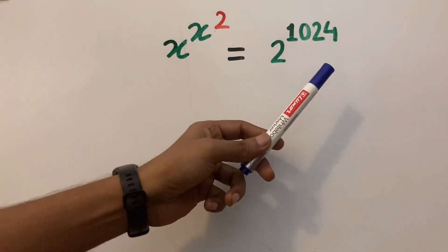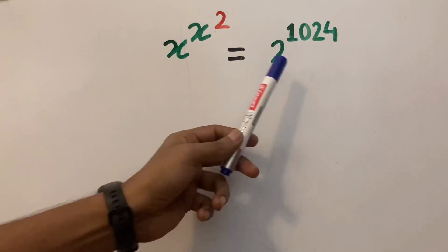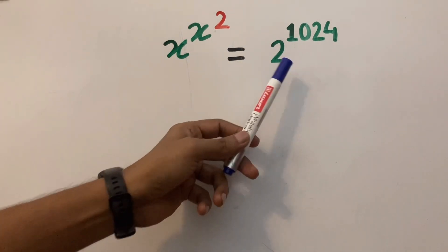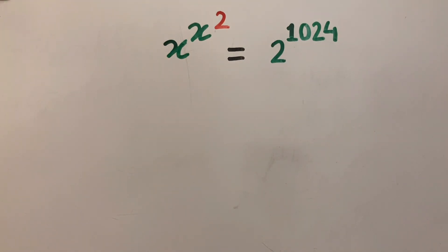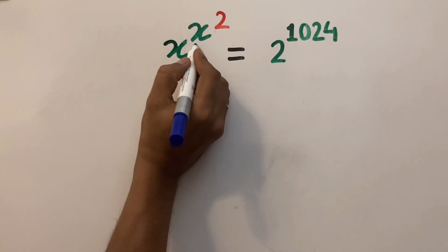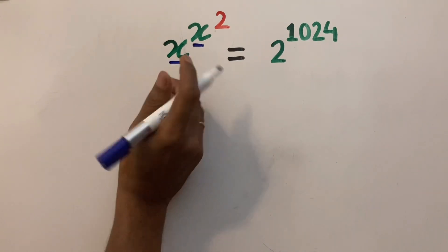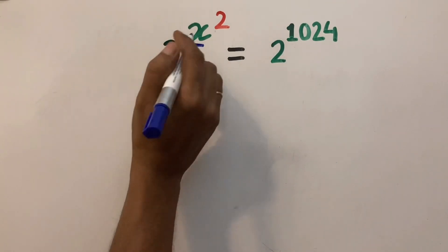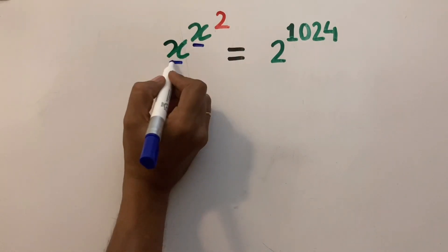To deal with this problem, the first thing we need to do is rearrange these exponents to simplify this equation. Here in these exponents we can see there are two x's, one here, one here. Out of them, one is squared and the other isn't.